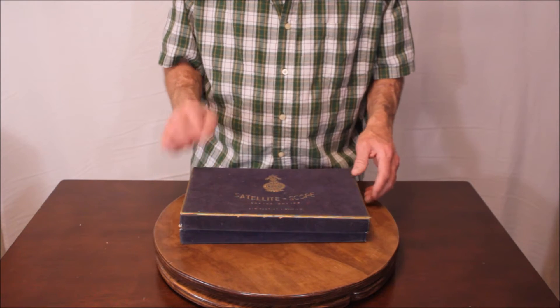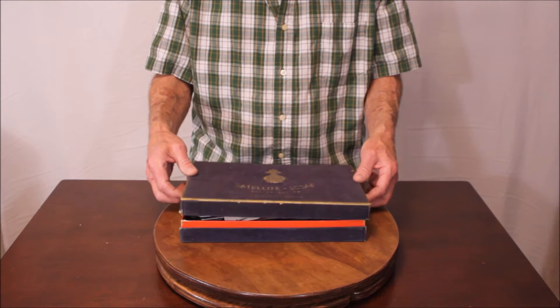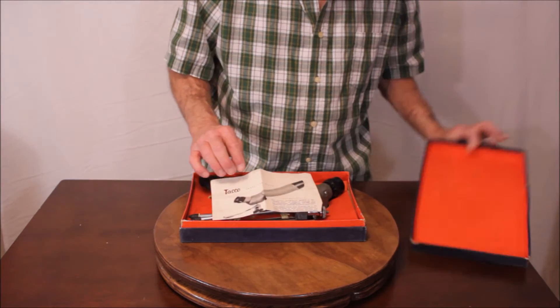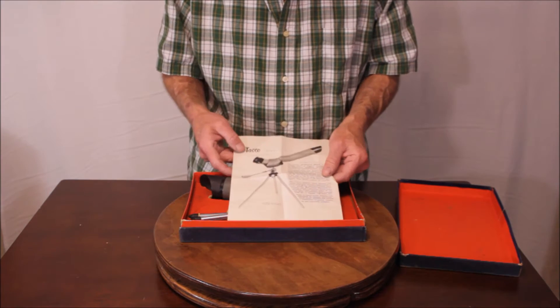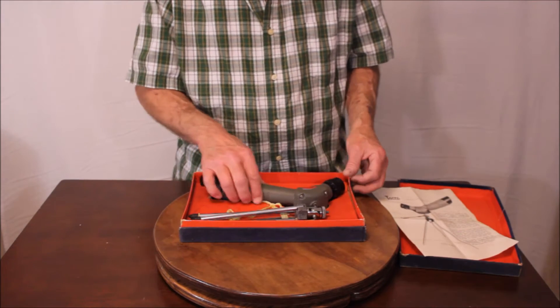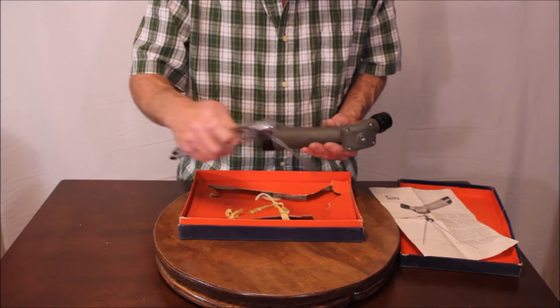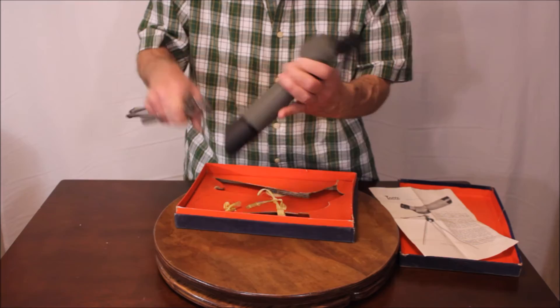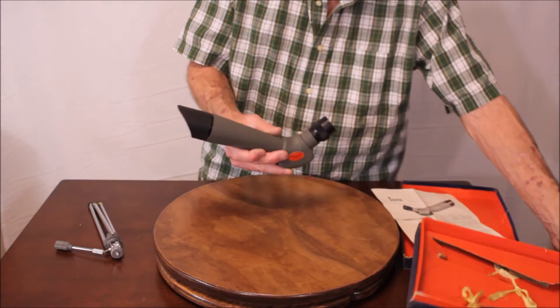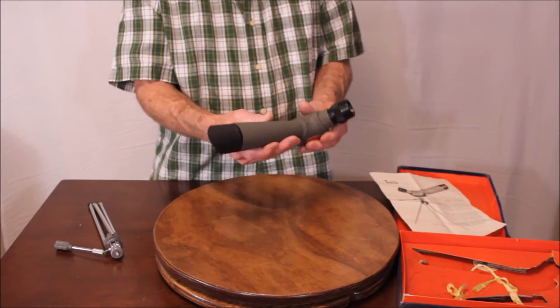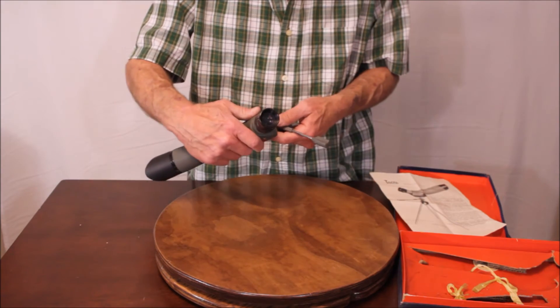This is a very interesting one. This is the Tasco satellite scope. It comes in this nice pseudo blue velvet box, cardboard with some sort of blue velvet coating. Here's a set of instructions for it. And there you have a very odd, strange configuration. Notice that the angle here is not 90 degrees, so it's more like maybe 120 degrees or something like that.